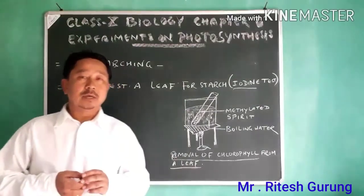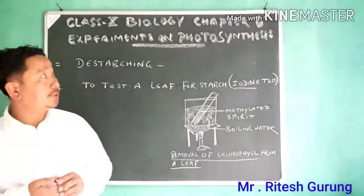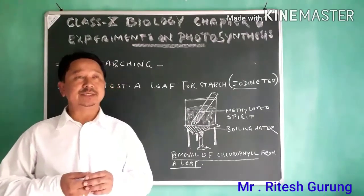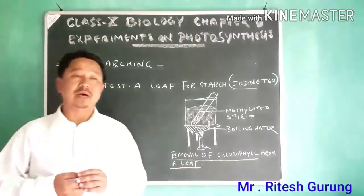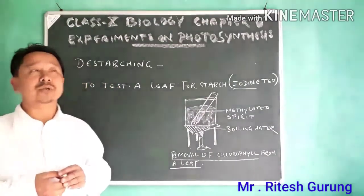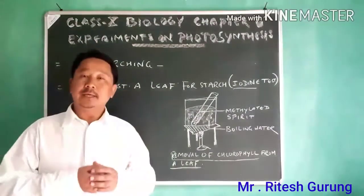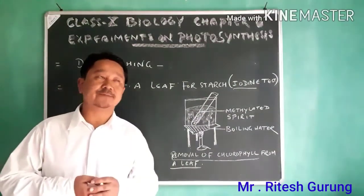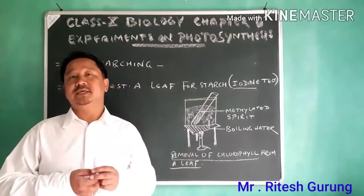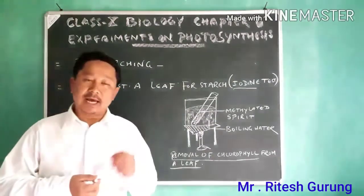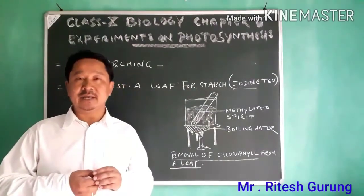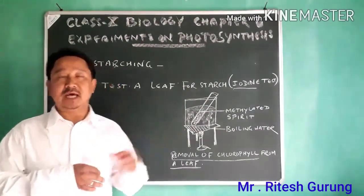Dear class, we will continue chapter number six, that is photosynthesis. Last time we talked about the definition of photosynthesis, components involved in the process, and the two phases of photosynthesis: the light dependent phase and the light independent phase. That is all we did in the last sessions.